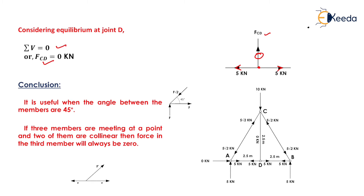Two conclusions are drawn from this question. First: if an upward force F acts at a joint and the angle between the inclined member and horizontal member is 45°, then the force in the inclined member is compression of magnitude F√2, and the force in the horizontal member is tension of magnitude F. Second: if three members meet at a point and two of them are collinear, the force in the third member is always zero.